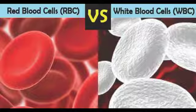Mammals have the smallest RBCs among vertebrates, and amphibians have the largest.